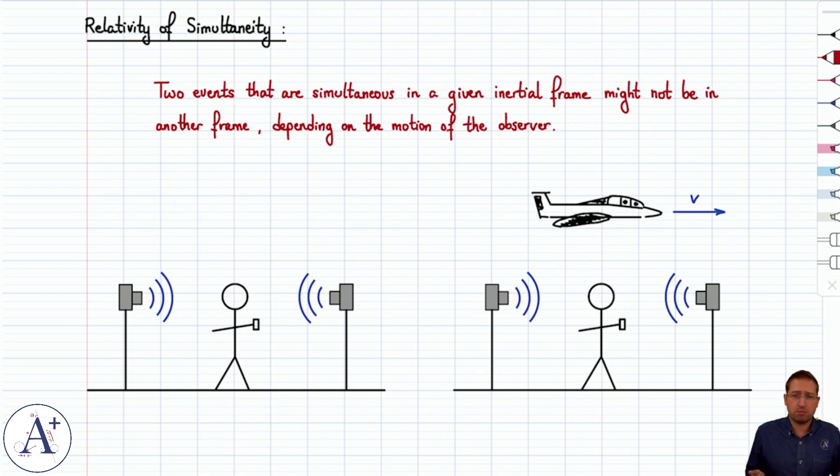Now in classical mechanics, time is time. Whatever time you measure, I measure the same time. So if an event happens, which is basically something happens somewhere at some time, let's say the bell rings at school, it doesn't make a difference whether you're sitting at your desk still or running through the door to go home. When the bell rings, the bell rings.